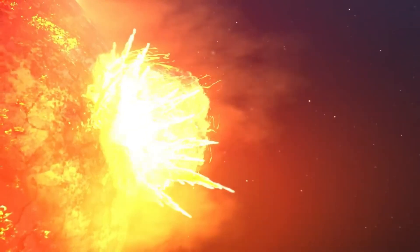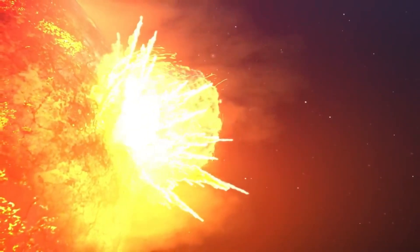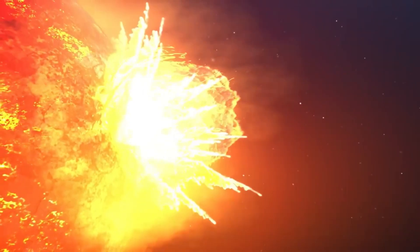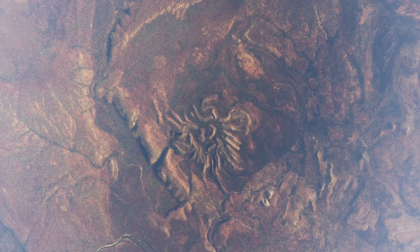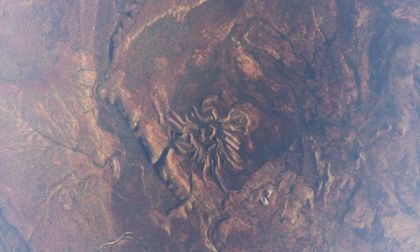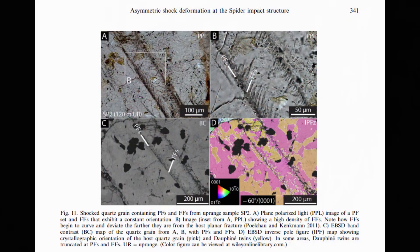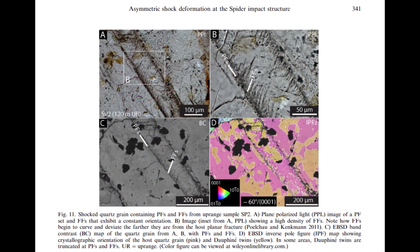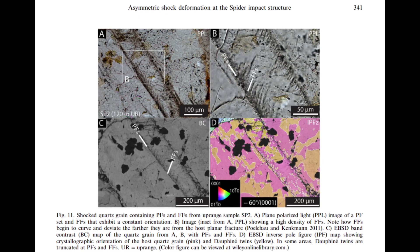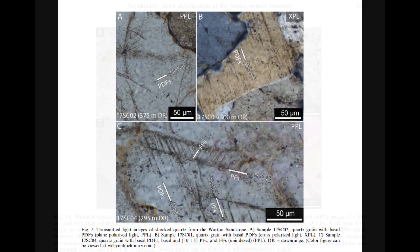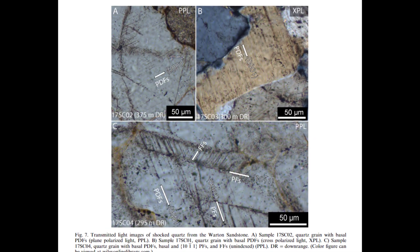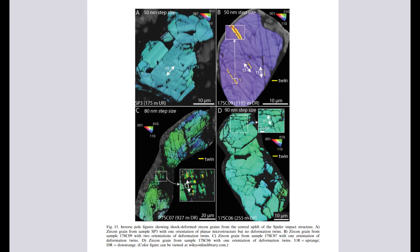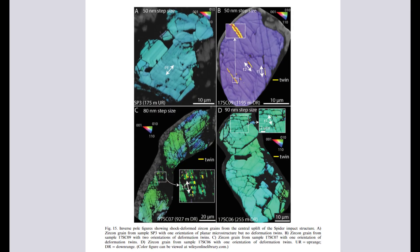For the geologists studying Spider, these shatter cones were a definitive piece of evidence — an irrefutable marker that this remote area had once been ground zero for a cosmic collision. As investigations continued, the story grew even more compelling. In addition to the shatter cones, another crucial piece of evidence emerged: shocked quartz. This rare and microscopic feature is created only under the intense pressures and temperatures of an impact event. The quartz crystals in the Spider Structure bore the telltale signs of planar deformation features — tiny, parallel lines within the crystal structure that can only form under the extreme conditions of an impact.